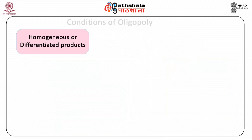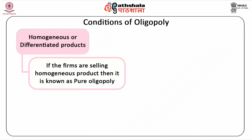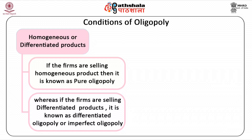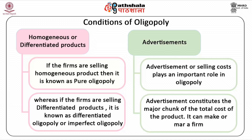Third, homogeneous or differentiated products. The type of oligopoly depends upon what type of product the oligopolistic firms are selling. If the firms are selling homogeneous products, then it is known as pure oligopoly. Whereas, if the firms are selling differentiated products, it is known as differentiated oligopoly or imperfect oligopoly. Fourth, advertisements. Advertisement or selling cost plays an important role in oligopoly and constitutes the major chunk of the total cost of the product.